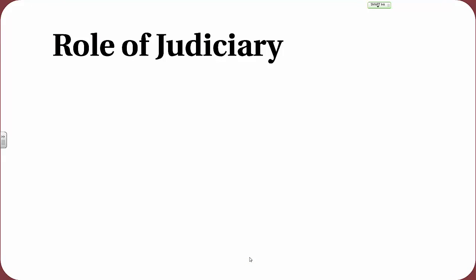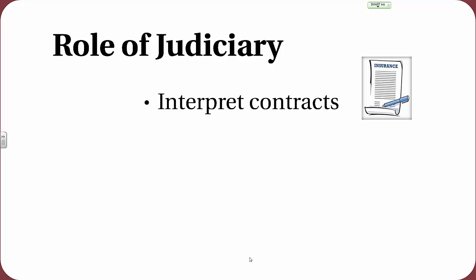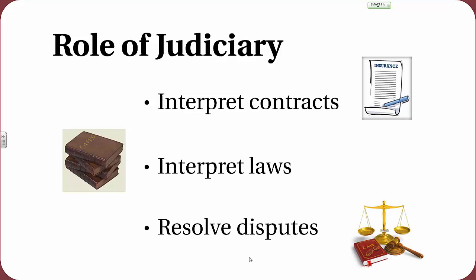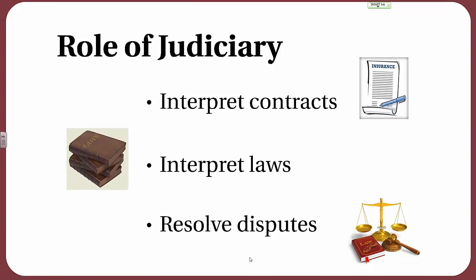The judicial branch has three distinct roles in regulating the business of insurance. First, courts and judges may be called upon to interpret insurance contracts — the insurance policy is a legal contract that can be very complicated and ambiguous, and any ambiguity must be interpreted in favor of the insured in most cases. Also, the judiciary interprets the laws and how to follow those laws as set by the state legislatures. Finally, the judiciary often gets involved in resolving disputes between policyholders and insurance companies, and disputes between insurance companies and claimants in liability insurance.